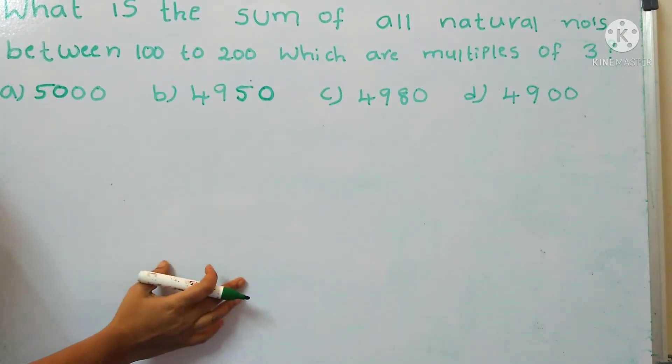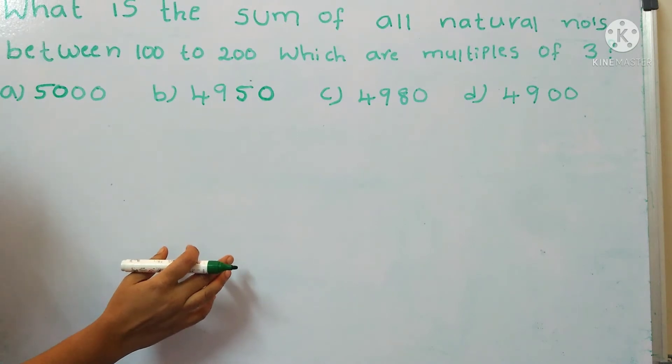Hi, in this video we are going to see the sum of all natural numbers between 100 to 200 which are multiples of 3.